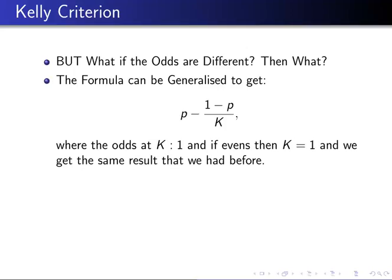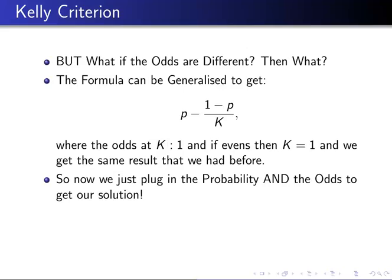Whatever bet you're taking, you'll have a probability of winning, which you'll typically estimate from historical data — it won't be exact, it'll be noisy, but it's your best estimate. And you'll have an estimate of, or be offered, a certain price for taking on that risk, so you know what k is. When deciding what size of bet to take, this formula totally solves the problem.